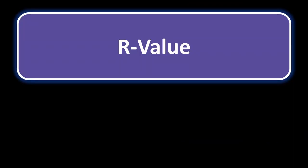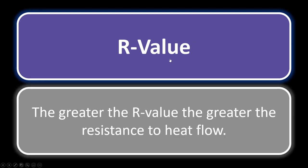R-value deals with resistance to heat flow in regards to insulation. The greater the R-value, the greater the resistance to heat flow. For attic insulation, R-60 would be better than R-30 — a higher number means more effective insulation.